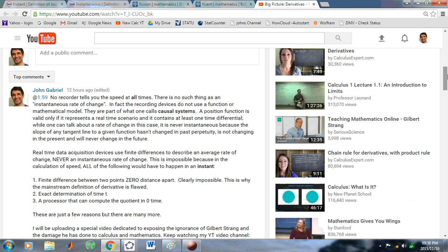Here's what I said in my comment. No recorder tells you the speed at all times. There is no such thing as an instantaneous rate of change. In fact, the recording devices do not use a function or mathematical model. They are part of what one calls causal systems. I doubt Strang even knows what those are. A position function is valid only if it represents a real-time scenario and contains at least one time differential. One cannot even begin to talk about a rate of change unless there is a time differential. Moreover, it is never instantaneous because the slope of any tangent line to a given function hasn't changed in the past, is not changing in the present, and will never change in the future.